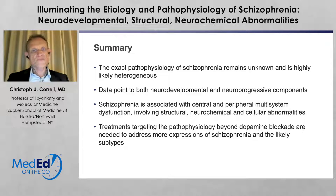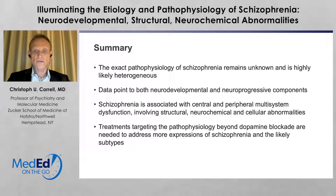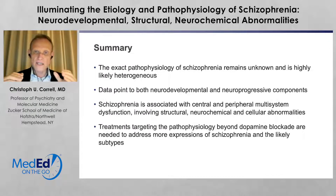In summary, the exact pathophysiology of schizophrenia remains unknown, but it is likely highly heterogeneous, with a common final pathway presenting clinically similarly. Both neurodevelopmental and neuroprogressive components are relevant. Schizophrenia is associated with central and peripheral multi-system dysfunctions involving structural, neurochemical, and cellular brain abnormalities. Treatments targeting pathophysiology beyond dopamine blockade are clearly needed to address more expressions of schizophrenia — both centrally and peripherally — and precision psychiatry approaches targeting specific subtypes are likely also required.